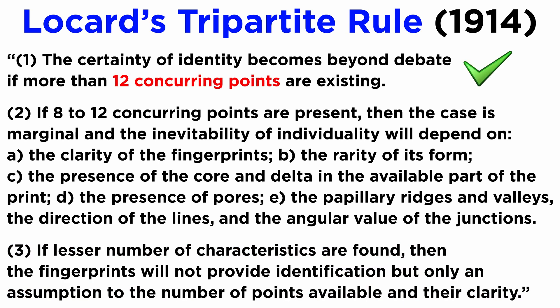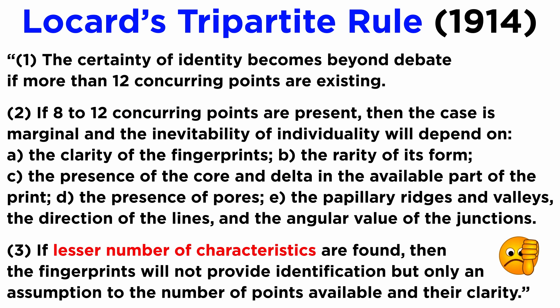From this rule, we can understand that 12 matching details is the threshold value for identification, so if more than 12 details are matching in two fingerprint impressions, they must be 100% identical. If 8 to 12 matching details are present, then the identification will depend on several different factors, including the clarity of the impression and the extensive study of the ridges and the pores present in the impression. We shall revisit this topic later in edgoscopy and poroscopy. If less than 8 details are established in an impression for comparison with a control sample, then its identification will not be certain.